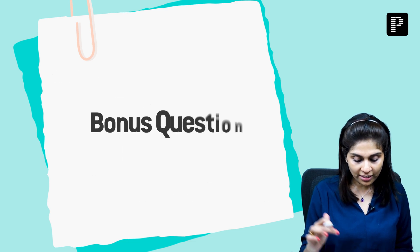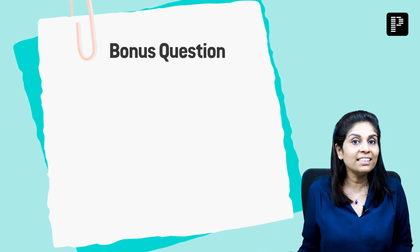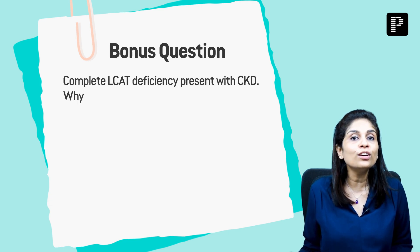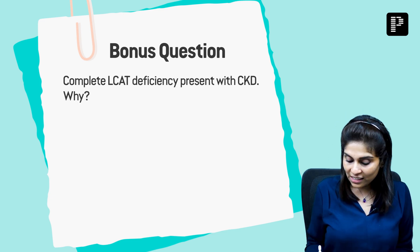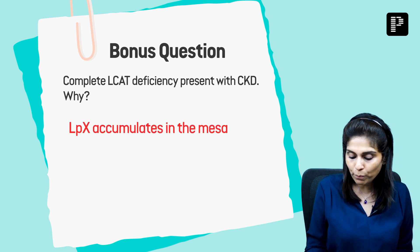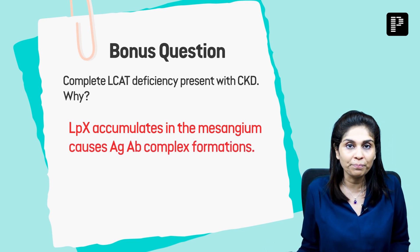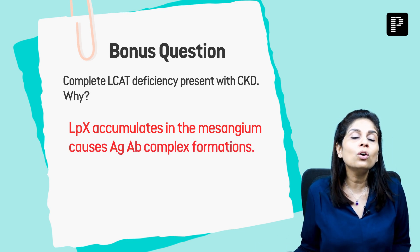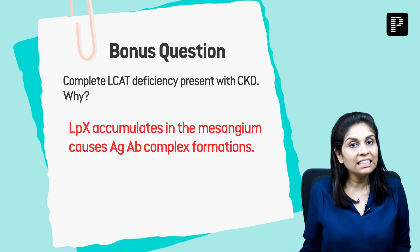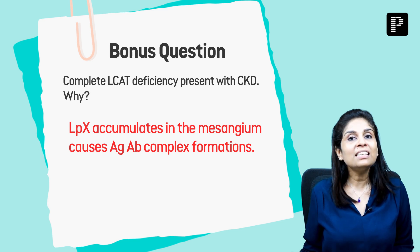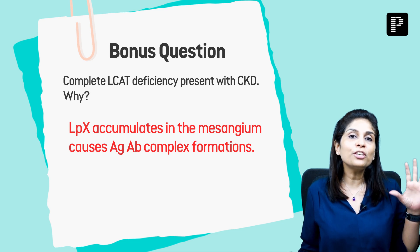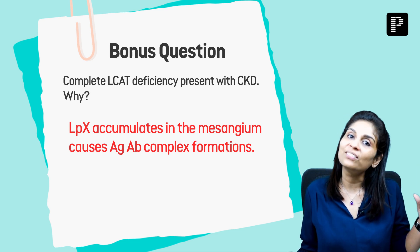Let's check the bonus question — give yourself 30 seconds. Complete LCAT deficiency presents with chronic kidney disease. Why? The reason is accumulation of lipoprotein X in the mesangium, which stimulates antigen-antibody complex formation, and that kidney damage causes chronic kidney disease. Let me see how much you have scored in the comment section. I hope this helped you — these visual cues will be in your memory forever. Thank you.